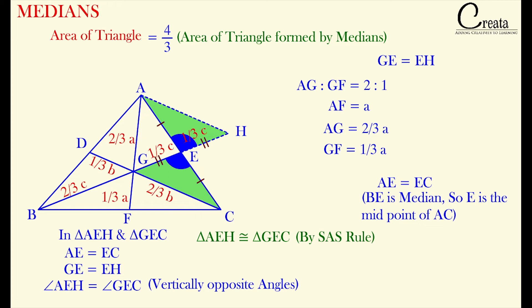We have proved both triangles are congruent to each other. So by CPCT, we can say GC is equal to AH, that is GC is equal to 2 by 3 B. So we can say AH is also equal to 2 by 3 B. Getting the understanding? We have just proved both of these triangles are congruent to each other by SAS rule.